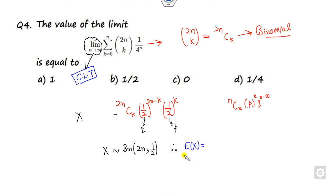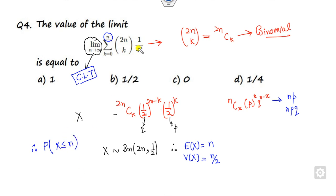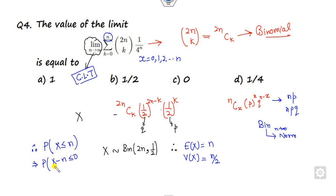Whenever there is a Central Limit Theorem, you have to calculate the mean and variance. In the binomial case, mean is np and variance is npq. Here, mean is n/2 and variance is n/4. Since you need the values up to n, the target is here. As n approaches infinity, the binomial distribution converges to the normal distribution. So you convert this into a z-score: x minus the mean, divided by the standard deviation. This gives z less than or equal to 0, which is phi(0). The probability of phi(0) in the normal distribution is 1/2. So the right answer is 1/2.